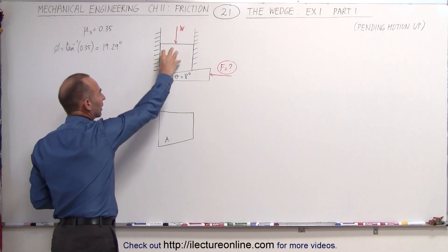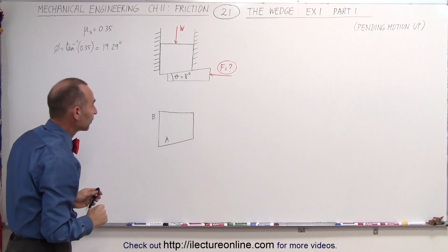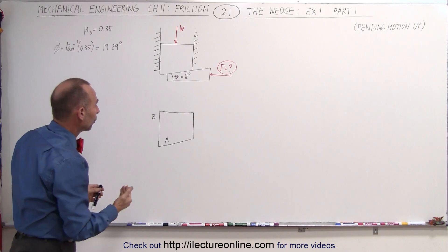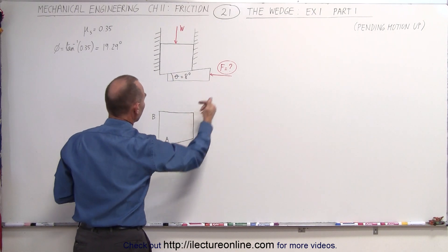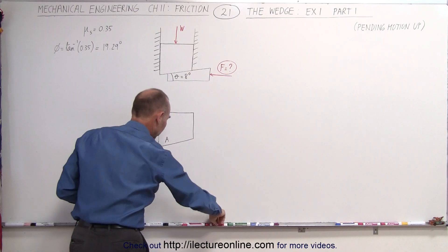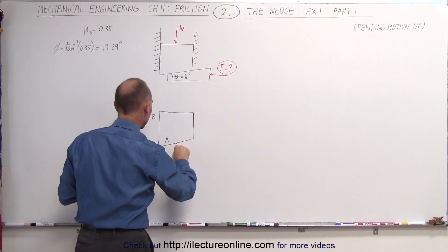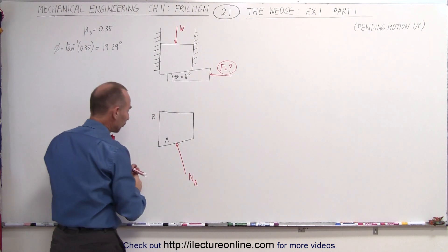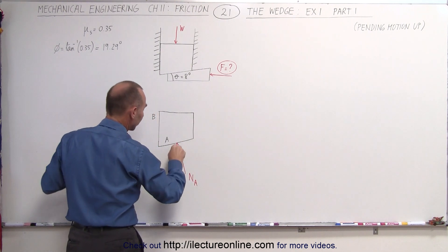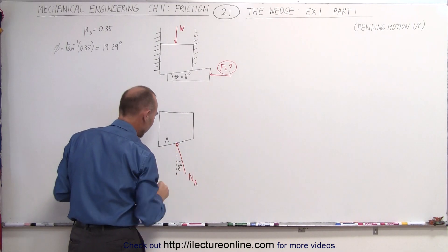We've taken the block by itself and will draw a free body diagram on it. Driving the wedge in applies a force normal to the bottom surface, so we see a normal force here — let's call this the normal force at A. That normal force makes an angle of 8 degrees with the vertical because of the slant of the wedge.